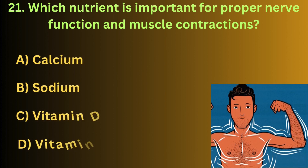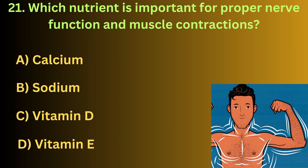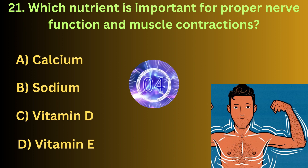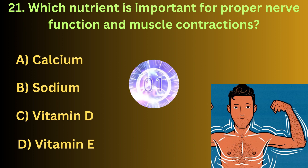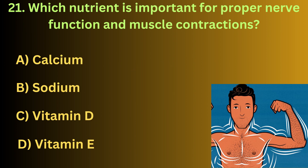Which nutrient is important for proper nerve function and muscle contractions? The correct answer is option A: Calcium.